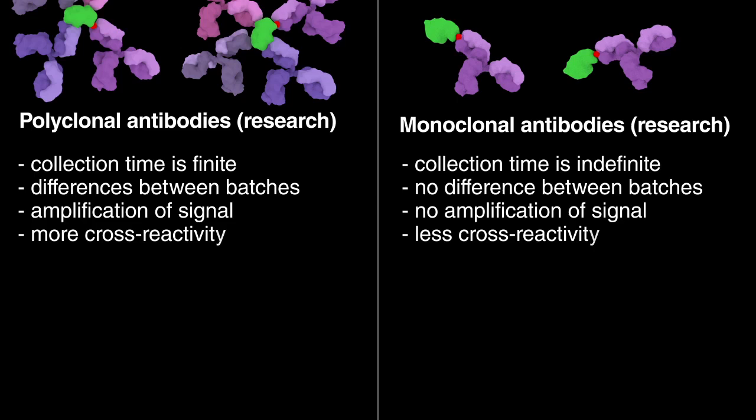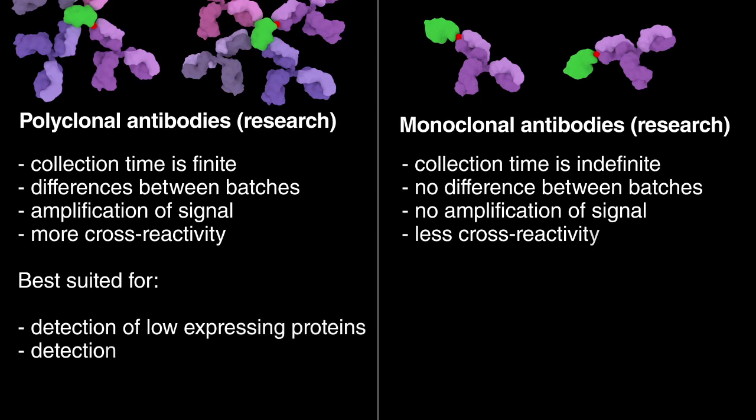As a result, polyclonals are better suited for detecting proteins that are expressed at low levels. They are also used to effectively detect different isoforms or versions of a protein or to screen for the presence of the protein of interest in other species.